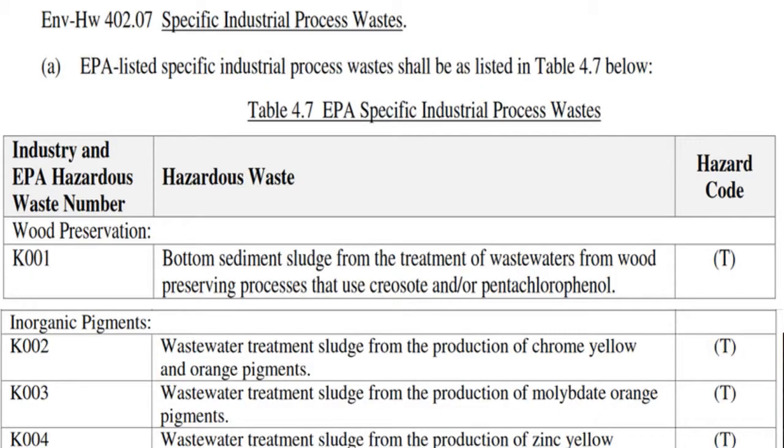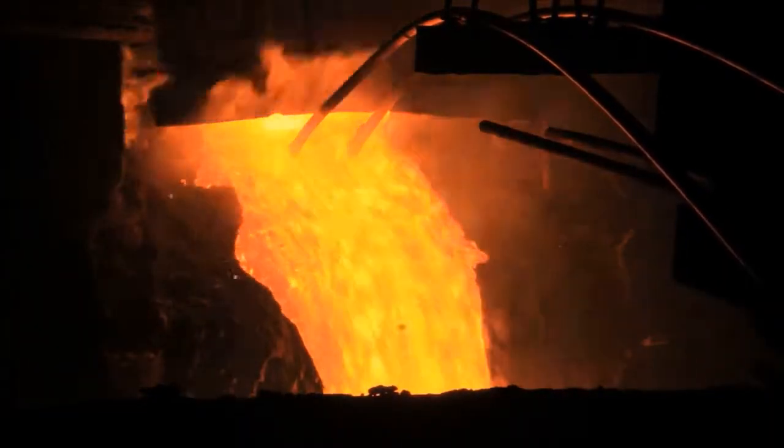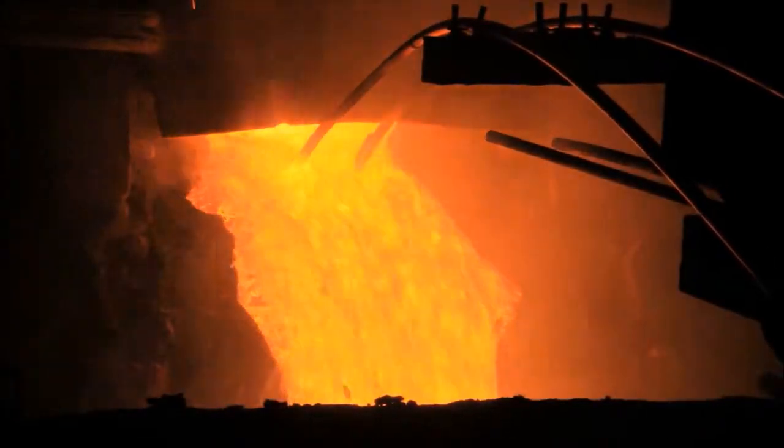The K list is perhaps the easiest of the four lists because only 13 types of industries can actually create a K listed waste. If you're not in one of those 13 industries, you don't have to worry about the K listed wastes. In New Hampshire, I've only run across two types of industries that are generating K listed wastes. The first is known as the iron and steel industry, but only those that have a foundry operation — it's the foundry process that can create these K listed wastes.